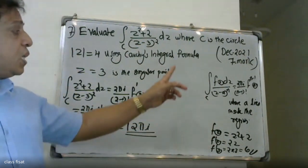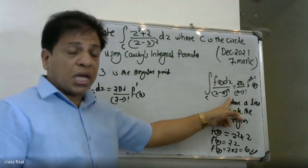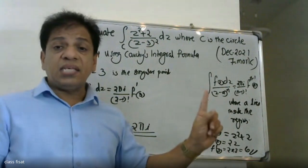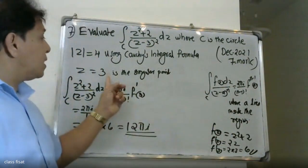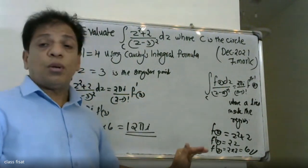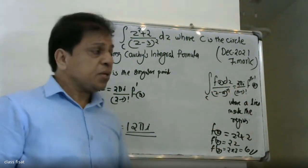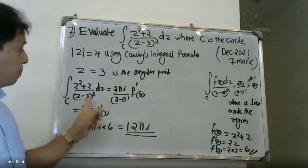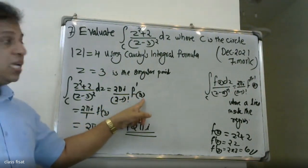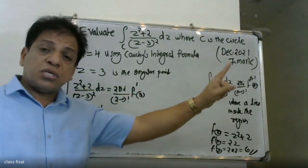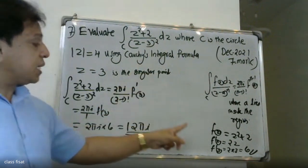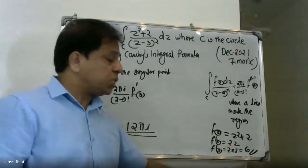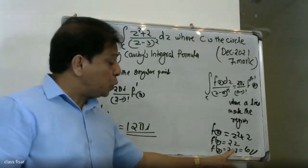We can apply the formula: the integral of f(z) / (z - a)ⁿ dz equals 2πi / (n-1)! times f^(n-1)(a), where a lies inside the region. This is Cauchy's integral formula. Here a is the point inside the region. With n = 2, we compute 2πi / (2-1)! times f'(3). f(z) = z² + 2, so f'(z) = 2z and f'(3) = 2 × 3 = 6.